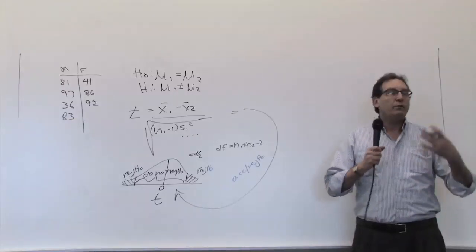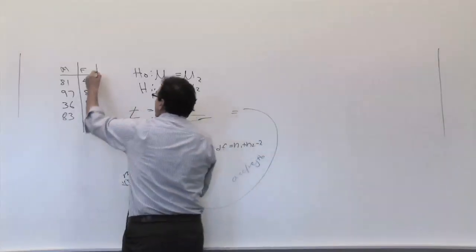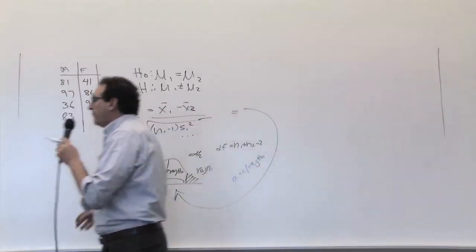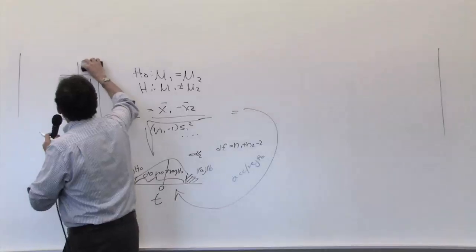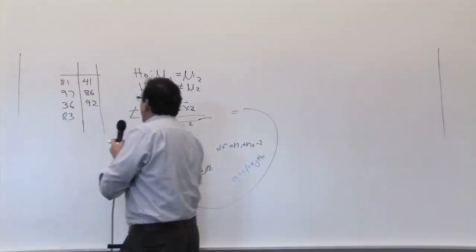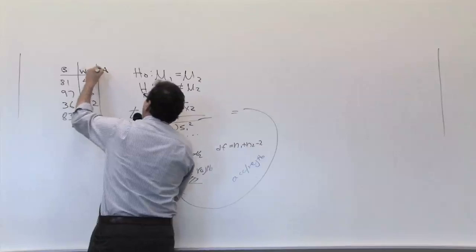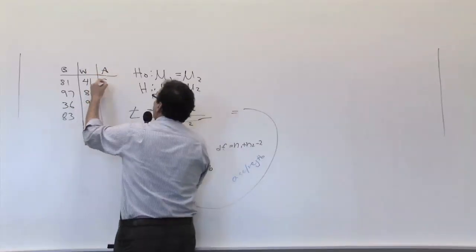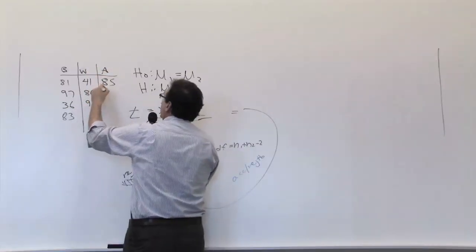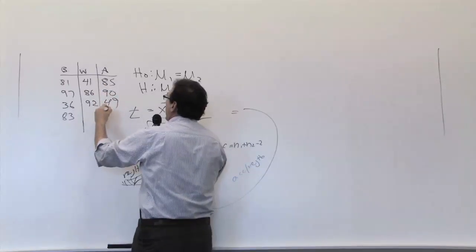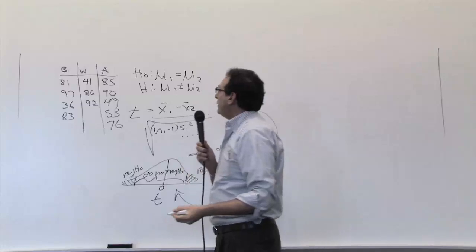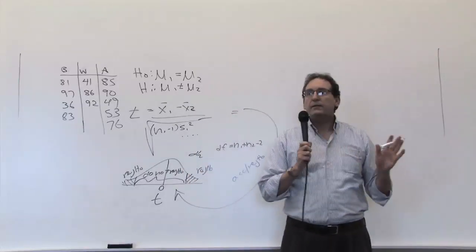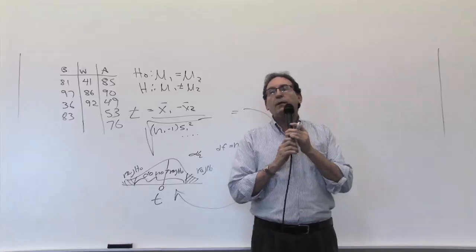The question we're moving on to in chapter 11 is: what if you have three groups of numbers? Instead of comparing males to females, what if you want to compare, say, black students to white students to Asian students? You have another set of grades — an 85, a 90, a 49, a 53, and a 76 — so you have five of those and you want to make a comparison. That's the question we're going to work out today.